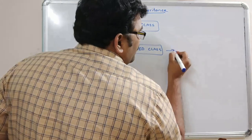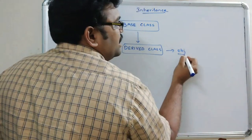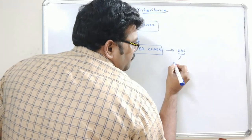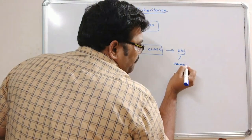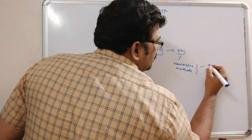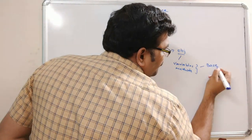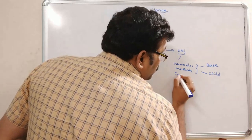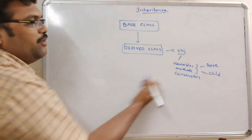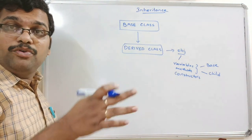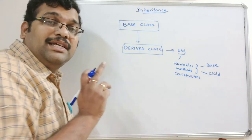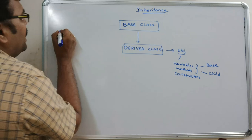By creating an object for the derived class, through this object it can access the variables, methods, and constructors of both the base class and the derived class. We covered all these things in the previous session — I'll post the link in the description section if you have any doubts about single inheritance.